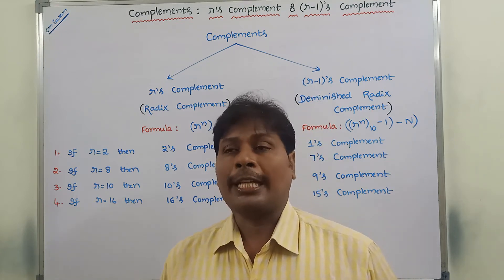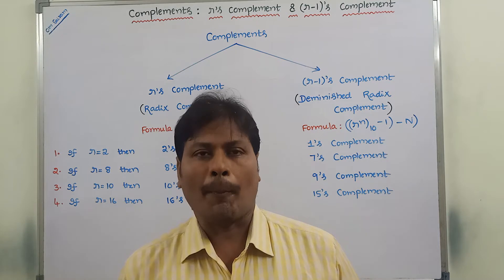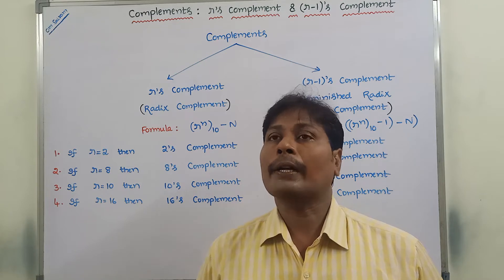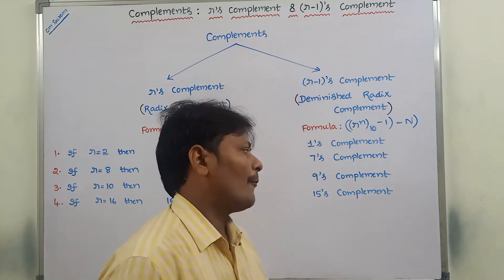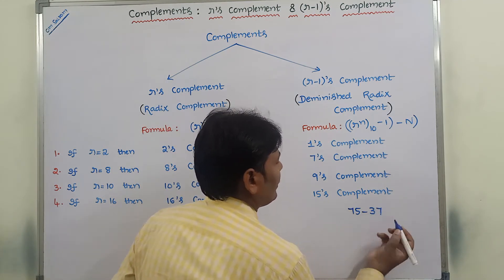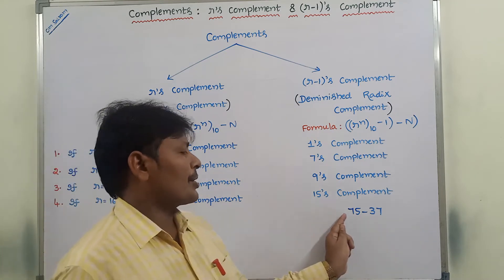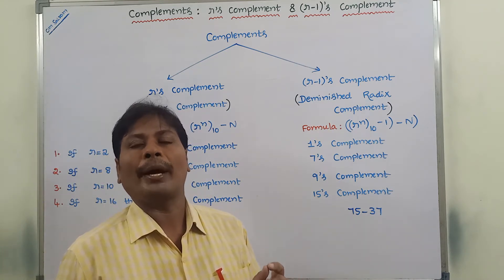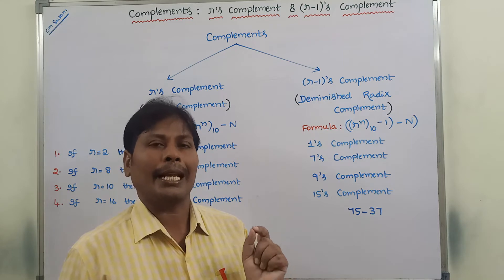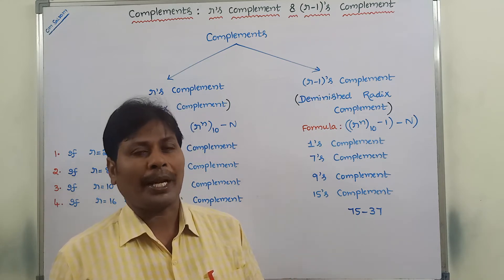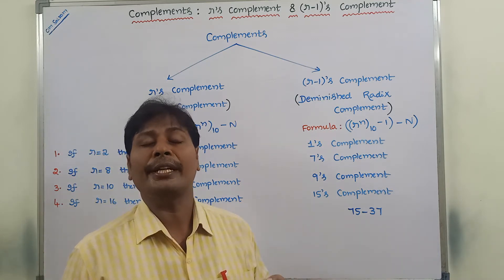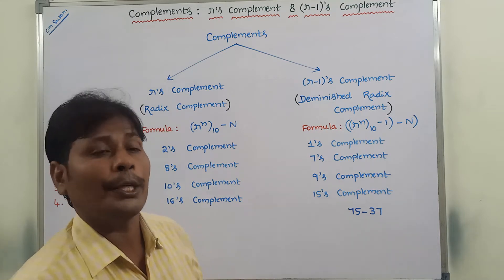First of all, what is the reason for developing complements? Complements are mainly used for representing negative numbers. Suppose we have to perform the subtraction operation — subtraction operation cost is more when compared to the addition operation. That means addition operation takes less cost. This subtraction operation can be converted into addition operation to reduce the cost.